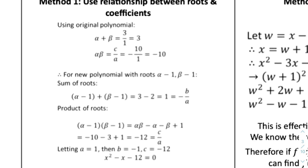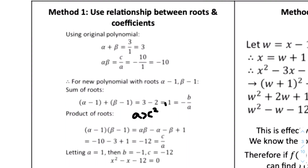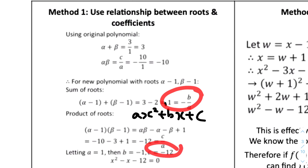Once we have -b/a = 1 and c/a = -12, we let A = 1 for the new equation of the form ax² + bx + c. Solving for B and C gives B = -1 and C = -12. Therefore, the new equation is x² - x - 12 = 0.